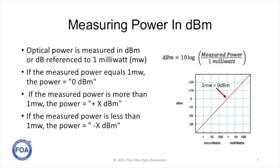If the measured power equals one milliwatt, the power is zero dBm. If the measured power is more than one milliwatt, higher power, that becomes plus whatever x dBm. If the measured power is less than one milliwatt, the power is minus, negative number, x dBm.